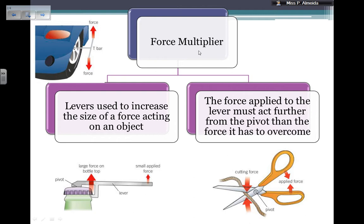So if you want to have a force multiplier, you can use levers. They increase the size of the force acting on the object, so your input force is smaller than the output force. The way that you achieve this is by making sure that the force that you apply acts further from the pivot than the force that you need to overcome. Again, here is the pivot, this is the applied force, and this is the cutting force.